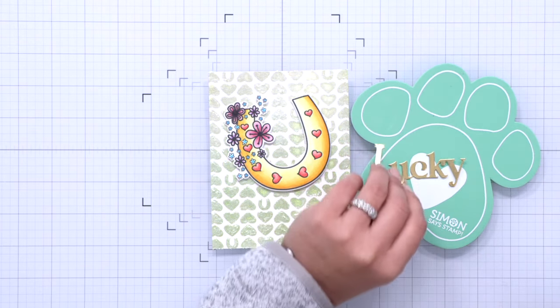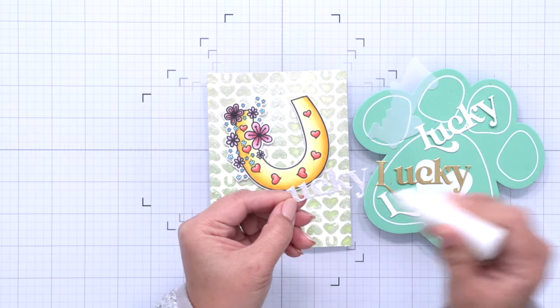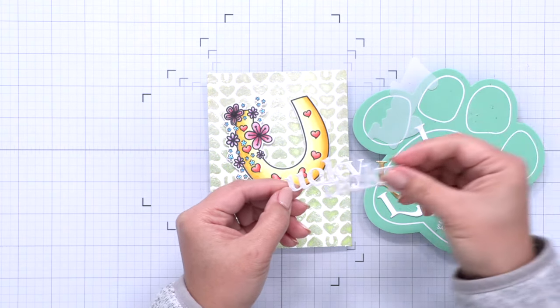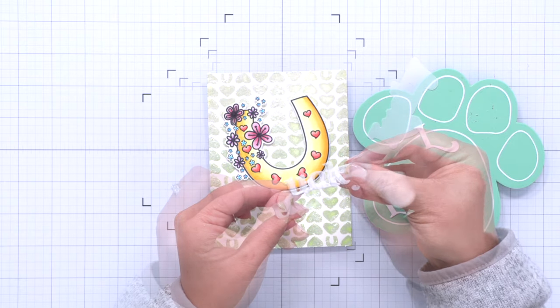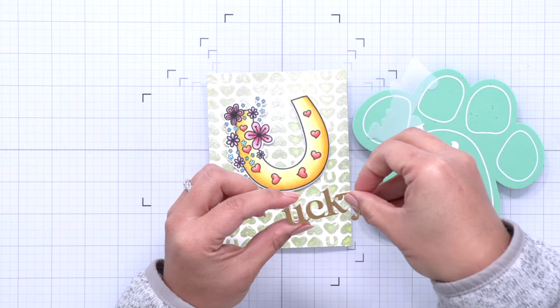And that pad that you see there if you've never seen it before it is a foam craft pad from Simon Says Stamp. It's going to help me poke those die cuts out so that I don't hit my glass board and accidentally scratch it or something and it's great because it's got that cushion in it.